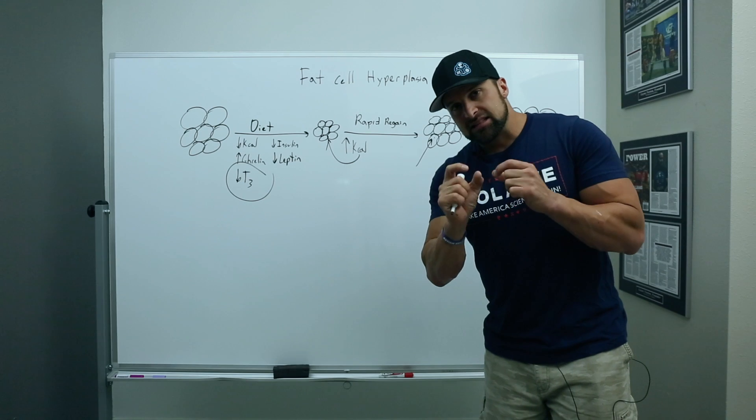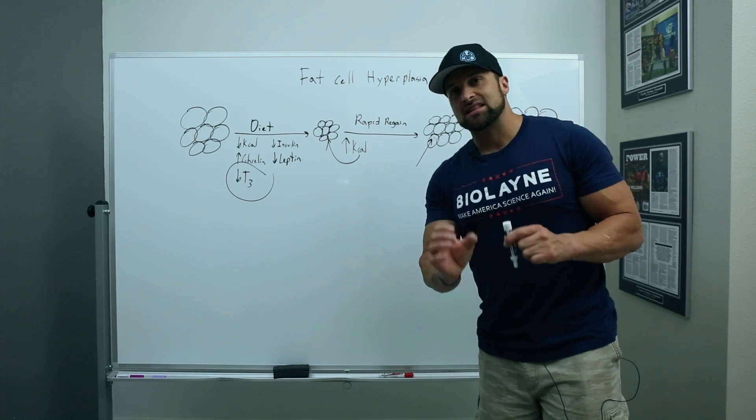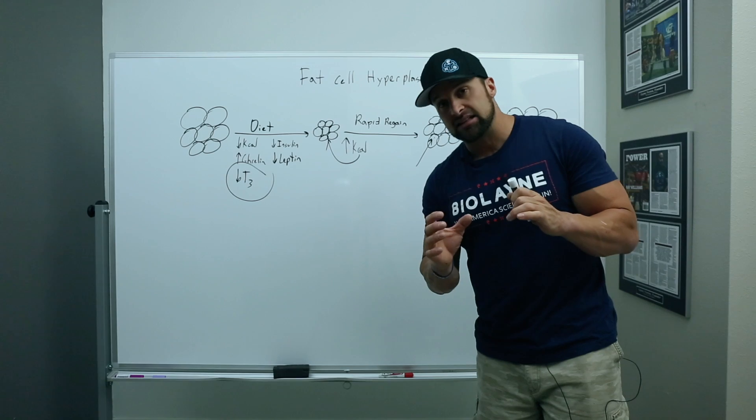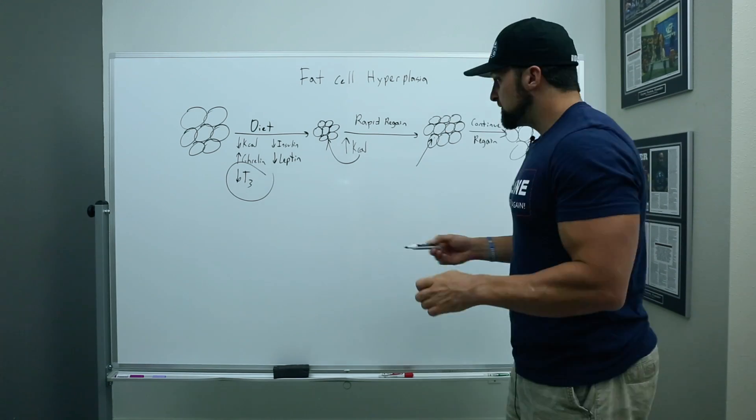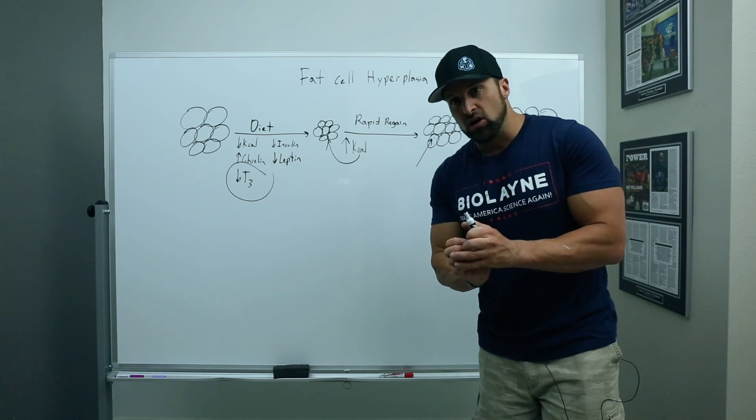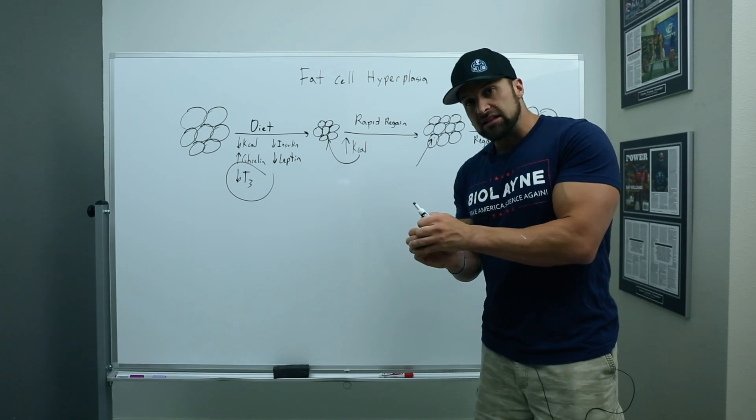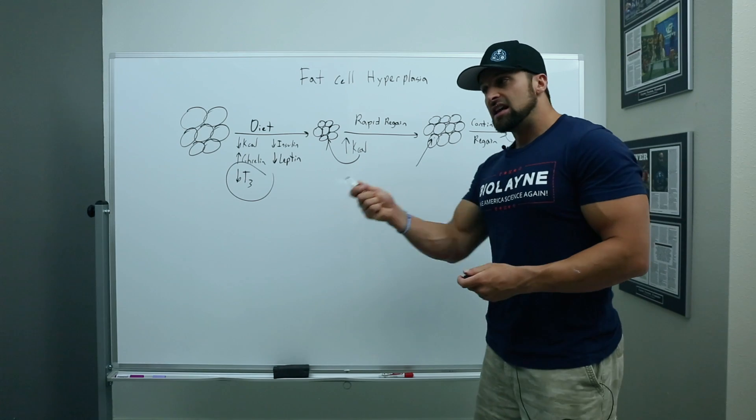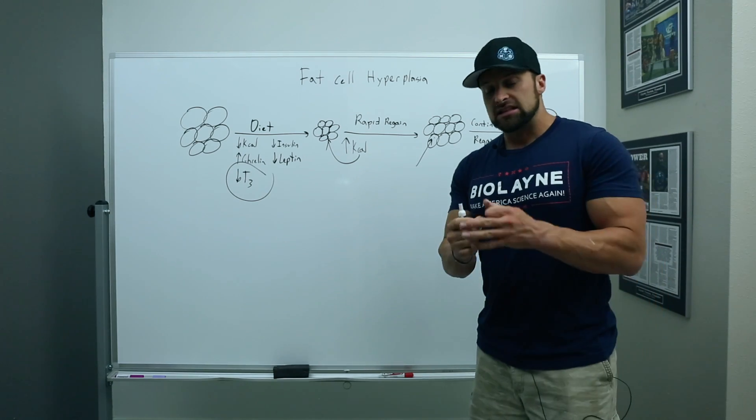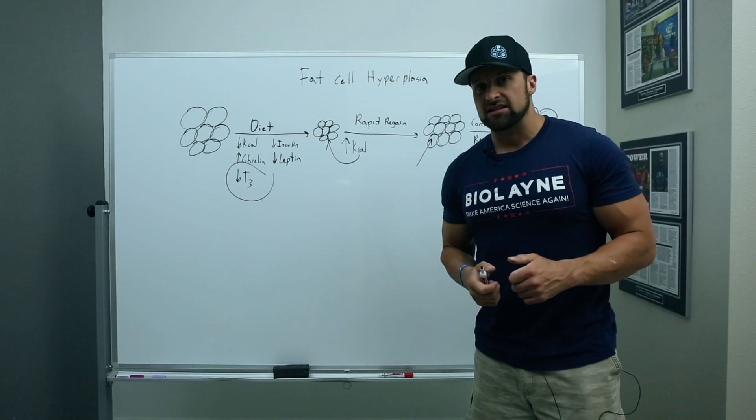So I'll say it again. Because set point, body fat set point, we believe is controlled by the size and sensed by the size of the individual adipocyte. If you create new fat cells, each individual cell will be smaller at the same previous body fat mass. Thus, it stands to reason that your body would continue to gain body fat until they reached their original size, their pre-diet size.